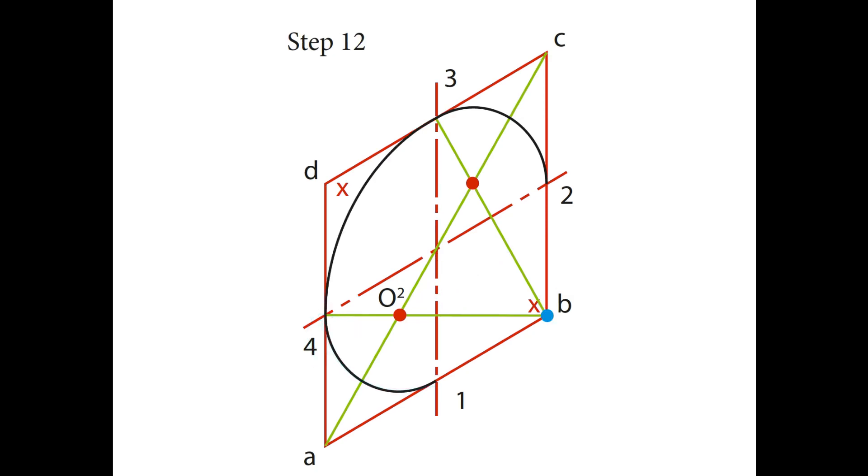Now for your big arcs. Draw an arc from B, use the distance from B to 3 and 4. And again draw an arc from D, use the distance from D to 1 and 2. And you should now have a near perfect ellipse.